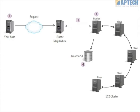Then a job flow is executed by Hadoop by downloading data from Amazon S3. This data is downloaded onto the cluster of slave instances.